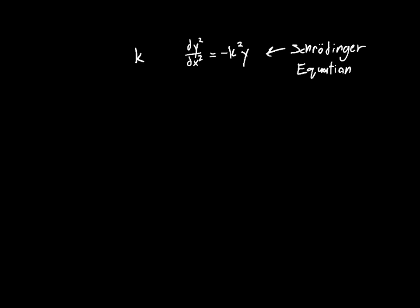But what is k, and why exactly are we dealing with k instead of some other value? Often you'll see the Schrodinger equation written using 2mE over h-bar squared. But where does that come from, and why are we using this k instead?